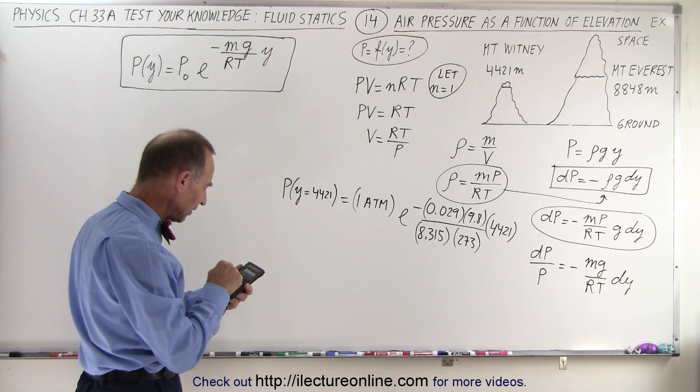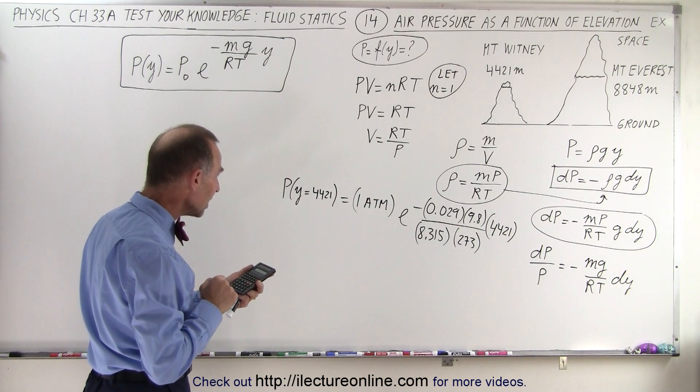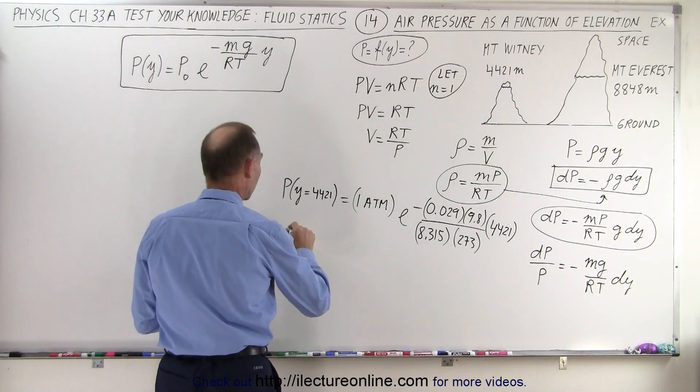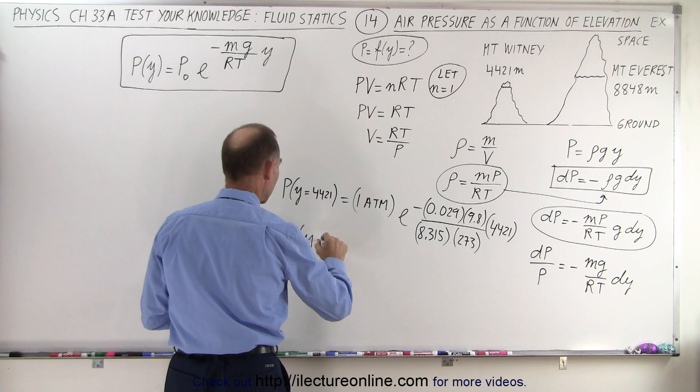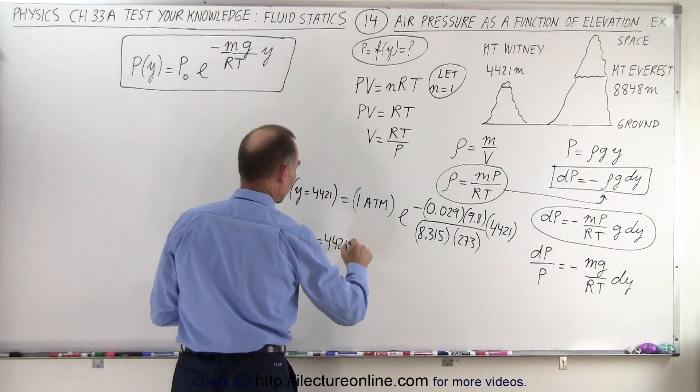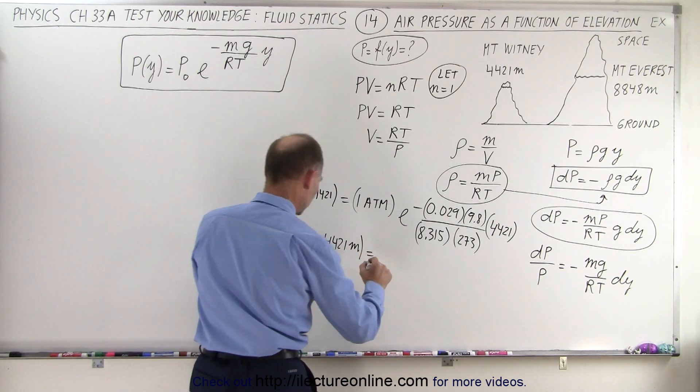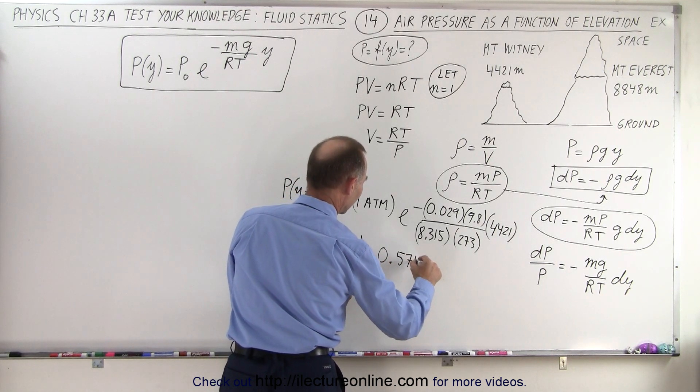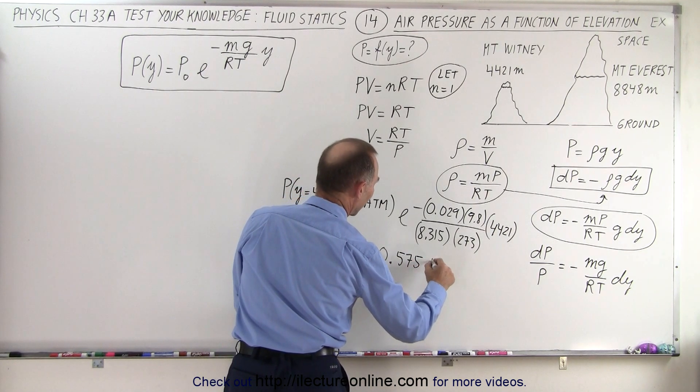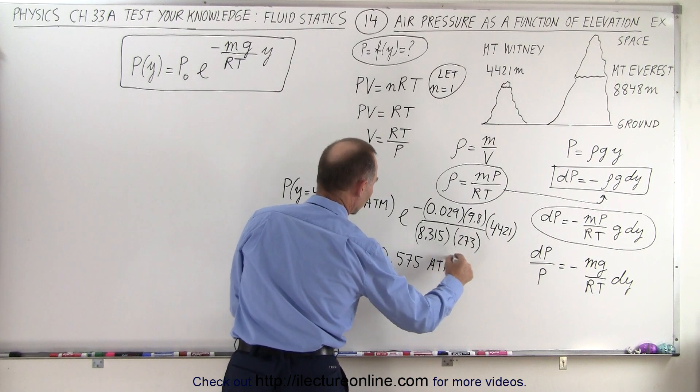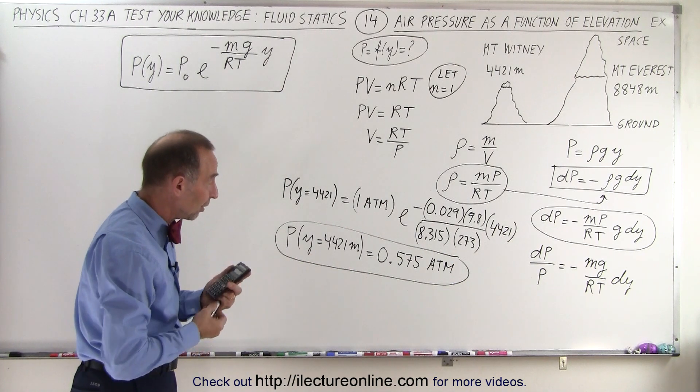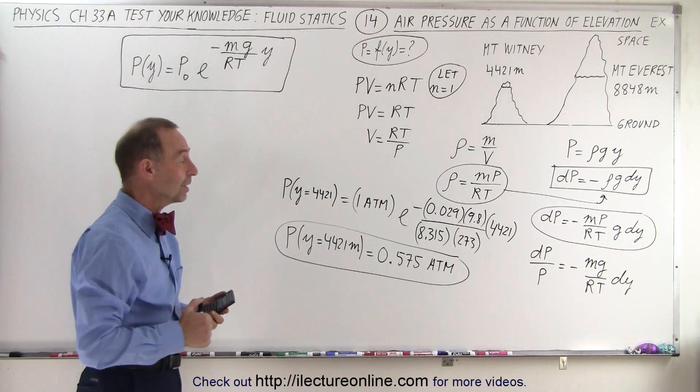0.029 times 9.8 times 4421 divided by 8.315 divided by 273. Put a negative in front of that, make that the exponent of e. And it looks like on top of Mount Whitney, the pressure at y equals 4,421 meters is equal to 0.575 times the atmospheric pressure. So we're at about 57, 58% of atmospheric pressure when you're on top of Mount Whitney.